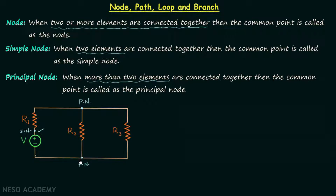Depending on the network, we can repeat this process — moving through an element and stopping at the node at the other end. While repeating this process we must be careful that no node is included more than once. The set of elements and nodes we have passed through is then known as a path. For example: starting from this node, through R1 to this principal node, then through R3 to this principal node — that set of nodes and elements forms a path.